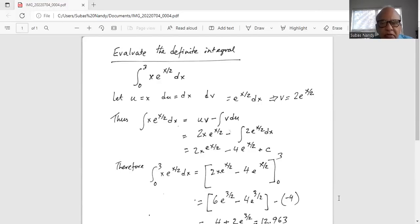So 2 multiplied by 2 is 4, natural number e raised to the power of x by 2 plus c, c is an integration constant. Now we are going to find out the value of the definite integral.